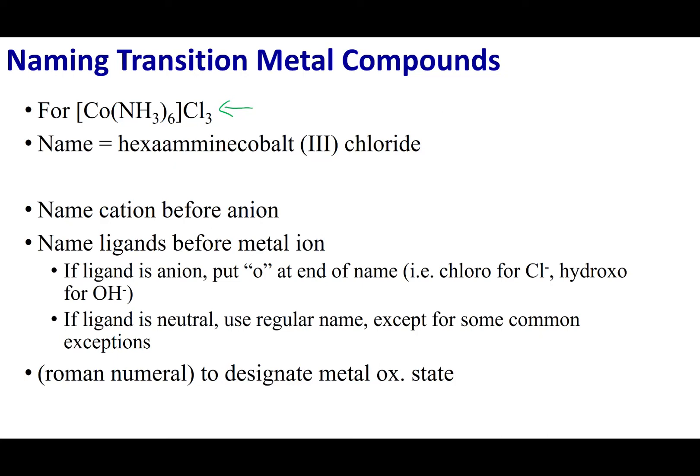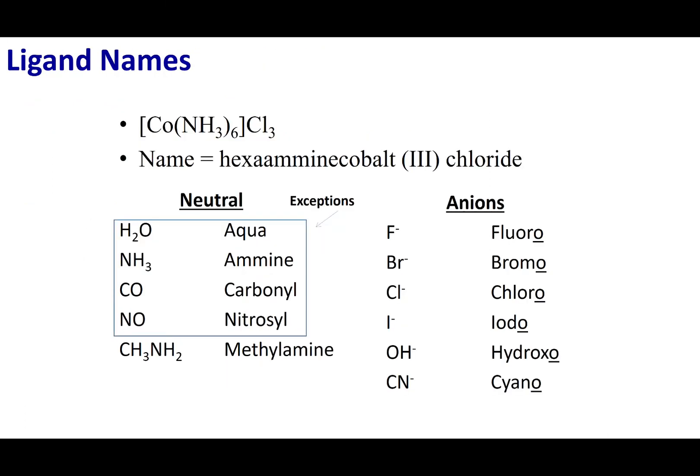Before the metal, you list all the ligands. If the ligand is neutral, simply use the name of that neutral ligand — with a few exceptions we'll go over in the next slide. If the ligand is charged, drop its suffix and add an -o at the end. Here's a list of some example ligand names. A neutral ligand like methylamine: you would just use the name methylamine in the complex ion name.